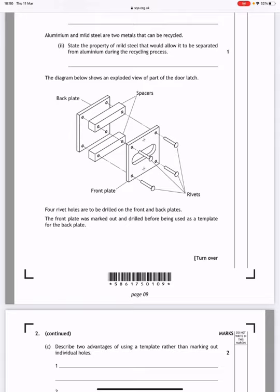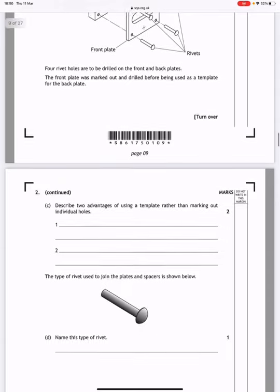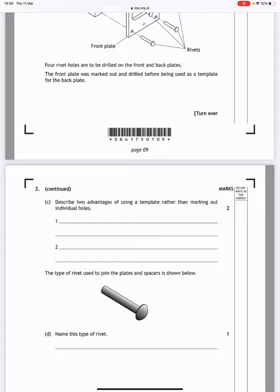The front plate was marked out and drilled before being used as a template for the back plate. Describe two advantages of using a template rather than marking out individual holes. Well, it would ensure that the holes on the front and back plate line up. It would ensure accuracy of repetition when you're making more than one.